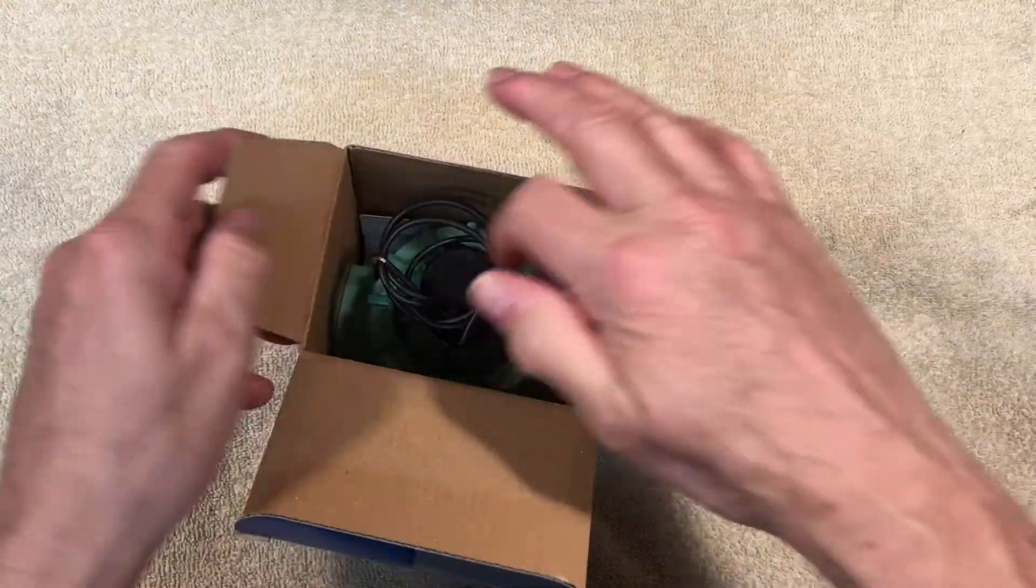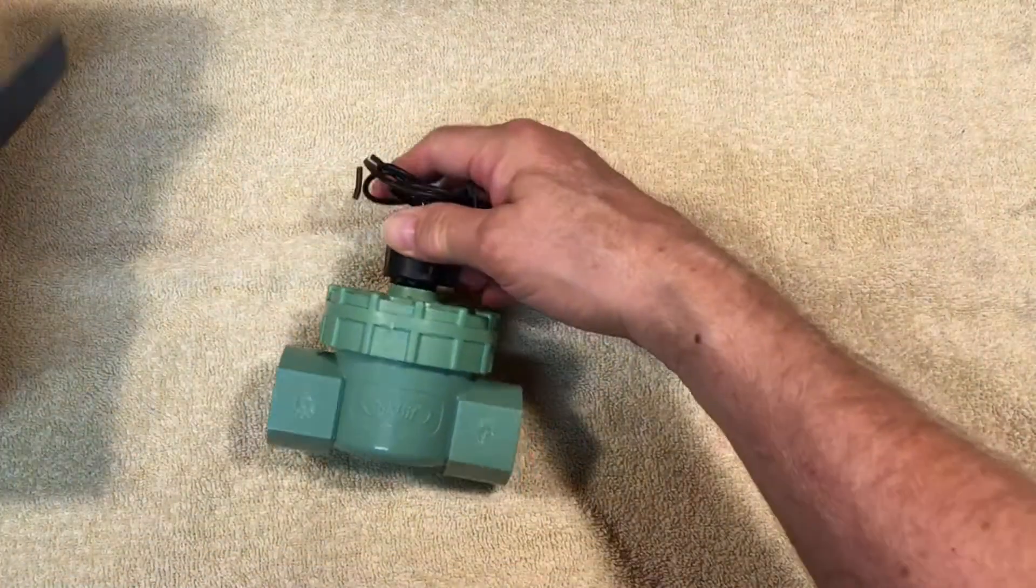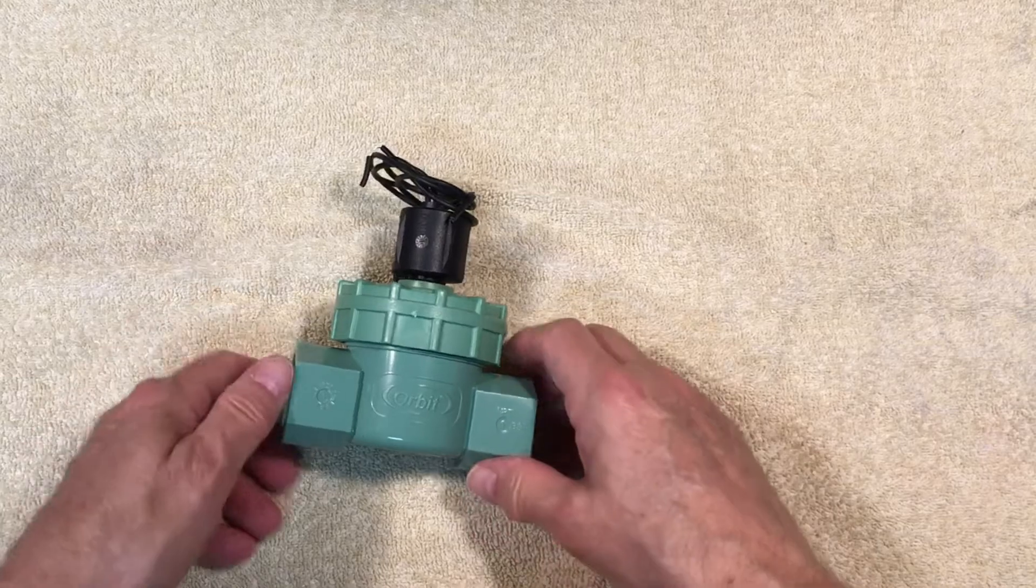Take a look at the overall valve. The body is at the bottom. There is an inlet marked by an arrow on one side. The other side is the outlet.